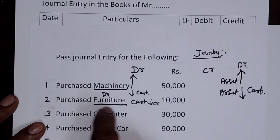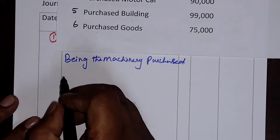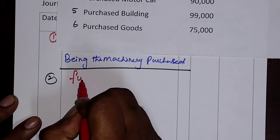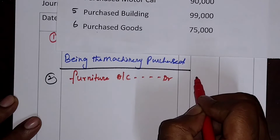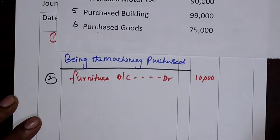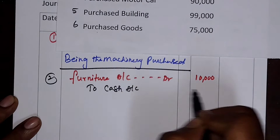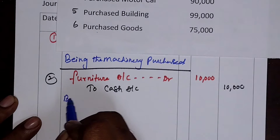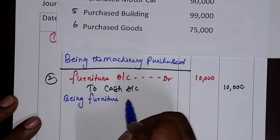For purchased furniture: Furniture Account — Debit — 10,000, since furniture is coming into the business, and the cash is going out: To Cash Account — 10,000. The narration means a simple explanation — being furniture purchased for cash.